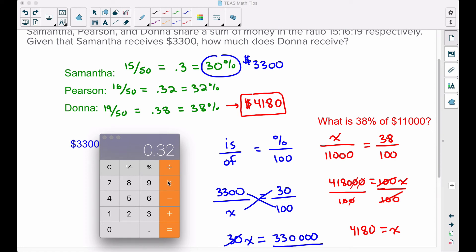Let's find 32 percent, 0.32, of, let's multiply $11,000. Pearson gets $3,520. And now let's apply a shortcut and let's find 38 percent. 38 percent, that's Donna. We figured out the 4180 over here.